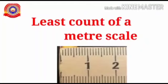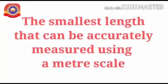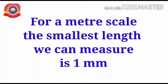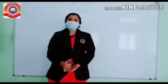Now let us study the least count of a meter scale. Least count is a very important concept for getting accurate readings from an instrument. The smallest length that can be accurately measured using a meter scale is its least count. For a meter scale, the smallest length we can measure is one millimeter. One millimeter is the smallest measurement that can be made on a meter scale.